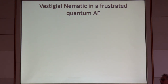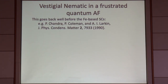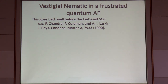The third topic is the notion of vestigial nematic order associated with frustrated quantum antiferromagnets. This idea of order that results from partial melting of some primary order is actually much older than the iron superconductors. This particular version — in which fluctuations of a stripe-ordered state give rise to a nematic phase — was contained in a paper by Premi Chandra, Piers Coleman, and Tolya Larkin from 1990.